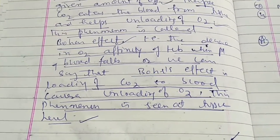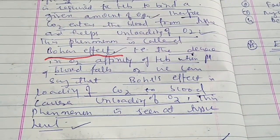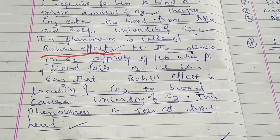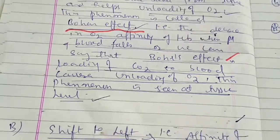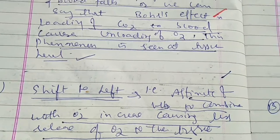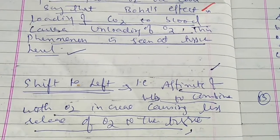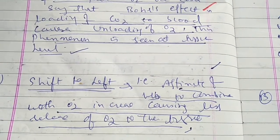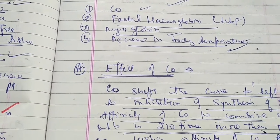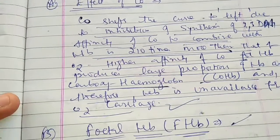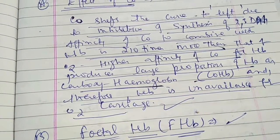Next is the very important Bohr effect in the transport of oxygen — a decrease in the affinity of hemoglobin for oxygen with a fall in the pH of the blood. This is the Bohr effect: the loading of CO2 and unloading of oxygen, seen at the tissue level. A shift to the left means increased affinity of hemoglobin for oxygen, causing less release of oxygen to the tissue. A shift to the right means dissociation. Causes of left shift include carbon monoxide, fetal hemoglobin, myoglobin, and decreased body temperature. CO has 210 times more affinity for hemoglobin than oxygen, so it becomes more tightly bound.